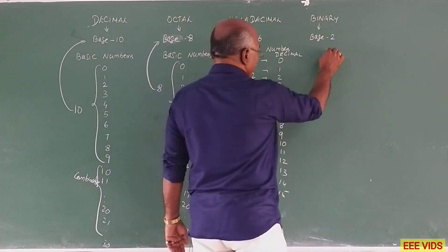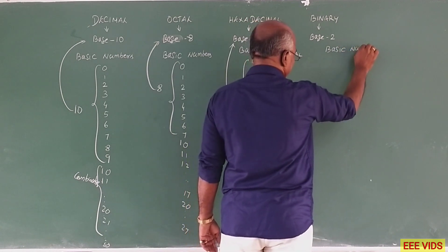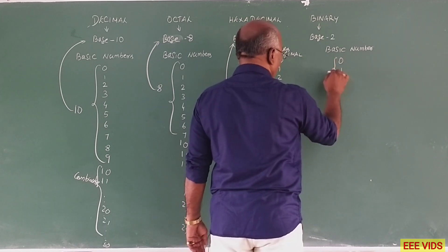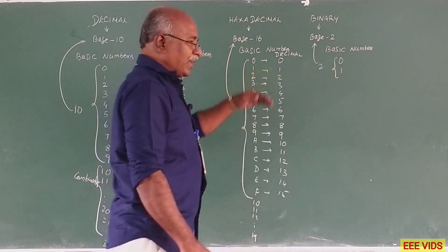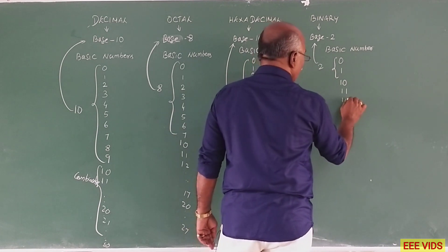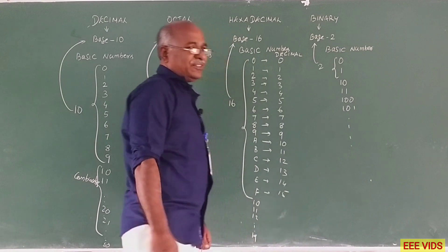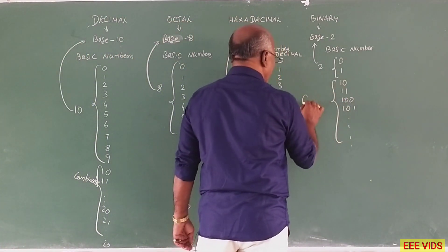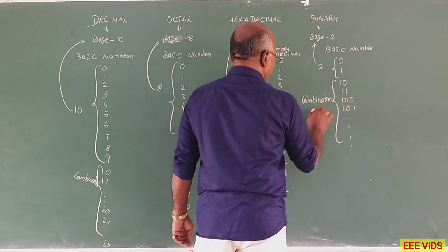Binary — we already know — the basic numbers are just 2: 0 and 1. So the base is 2. Remaining numbers are combination numbers: for example, 10, 11, 100, 101 — these are all combination numbers made from 0 and 1. So basic numbers are 0 and 1, and all remaining numbers are called combination numbers.